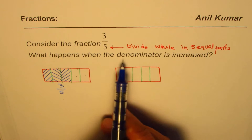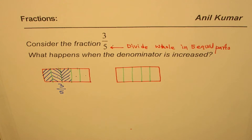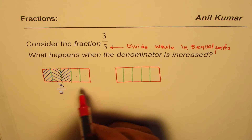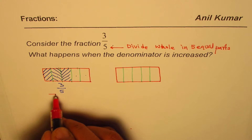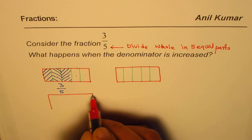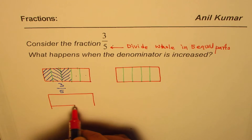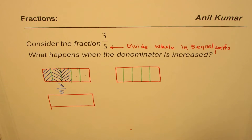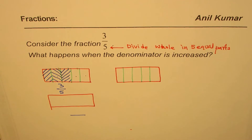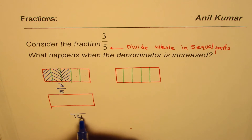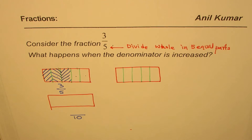Now the question is: what happens when the denominator is increased? Let me redraw the same rectangle. This time I will increase the denominator — that number is not five but higher. It could be six, seven, eight, nine, or whatever. I'll make it 10.